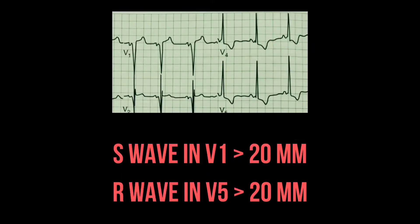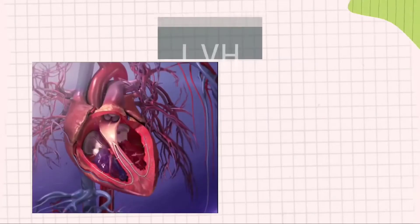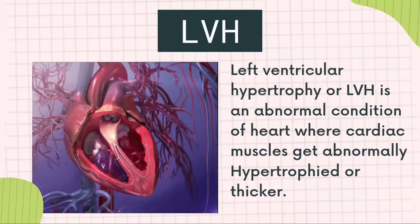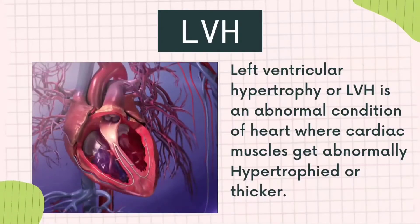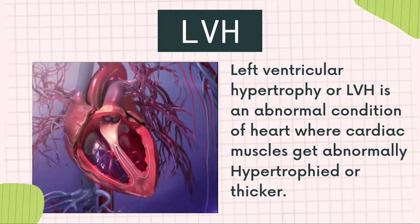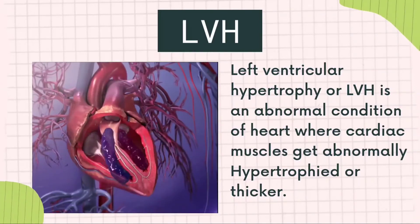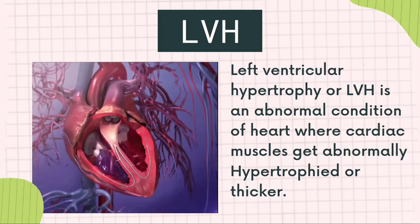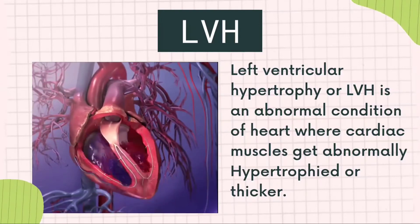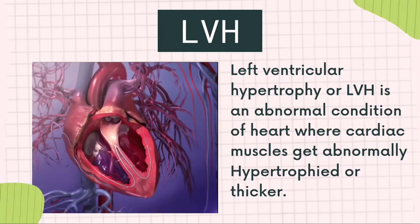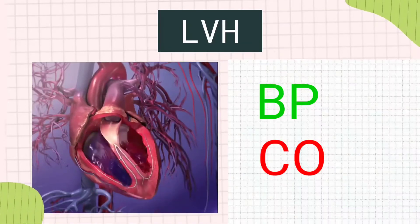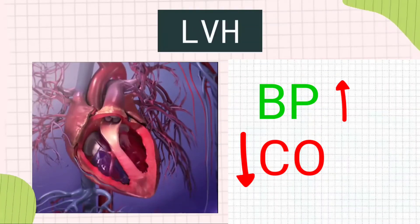So what could be the possible diagnosis for a patient with these ECG changes? Left ventricular hypertrophy is an abnormal condition of the heart where the muscles of the left ventricle are abnormally thicker. Long-standing hypertension is one of the main causes. Increased thickness of the left ventricle causes it to work inefficiently, resulting in increased blood pressure and reduced cardiac output.